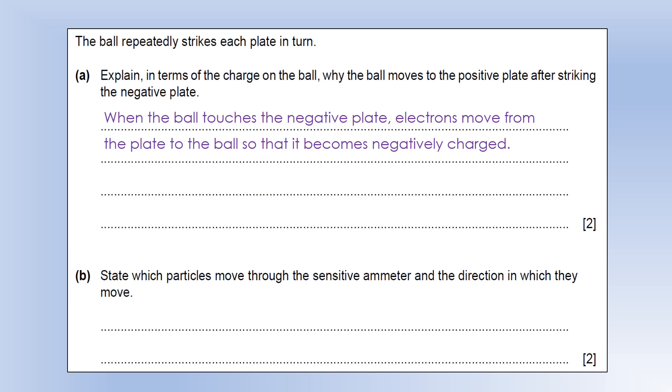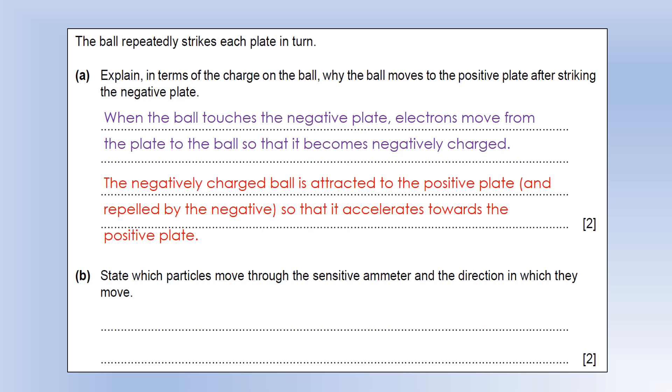When the ball touches the negative plate, electrons move from the plate to the ball, so the ball becomes negatively charged. That happens because it's a conducting ball, so it's going to pick up the charge from the negative plate. The negatively charged ball is going to be attracted to the positive plate and also repelled by the negative plate, so it's going to accelerate towards the positive plate and then end up colliding with that. The whole process reverses and carries on over and over again.